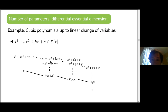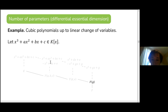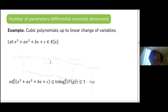In the example of cubic polynomials up to linear changes of variables: starting with a cubic polynomial defined over K, we saw that it descends to a subfield F adjoined g with one parameter. The differential essential dimension of that cubic is the minimum differential transcendence degree of the differential field it descends to. Here, since it descends to F[g], the differential essential dimension is at most one. If g is inside F it would be zero; if g is differentially transcendental over F, it would be one.